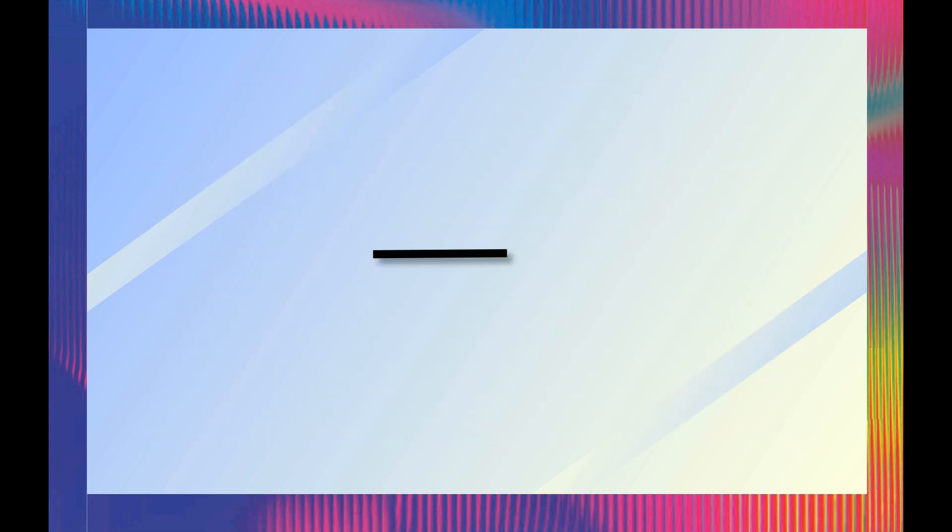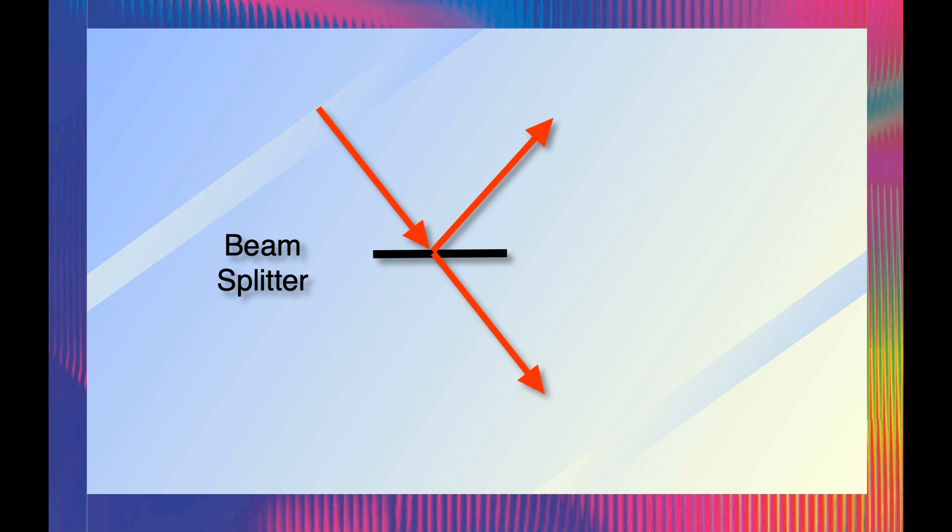The so-called beam splitter is actually a misnomer. Its name implies that it takes a light beam and splits it into two, as if there were only one input.